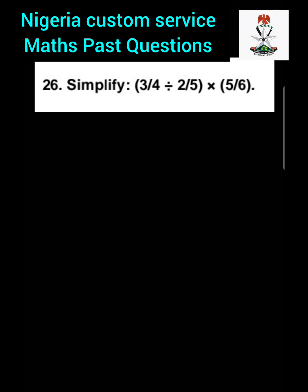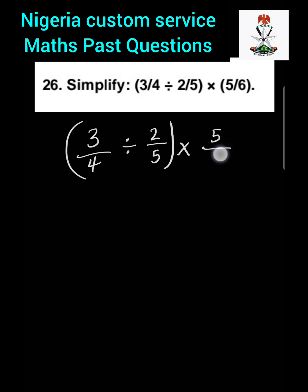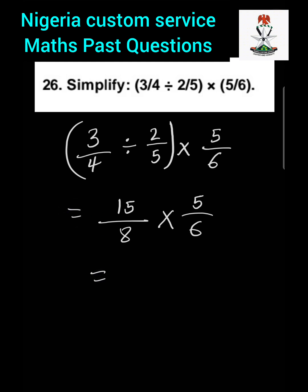Question 26: Simplify (3 over 4) divided by (2 over 5), then multiply by (5 over 6). We first work on the division: dividing a fraction means cross-multiplying, so 3 multiplied by 5 is 15, and 4 multiplied by 2 is 8, giving us 15 over 8. Then we multiply by 5 over 6.